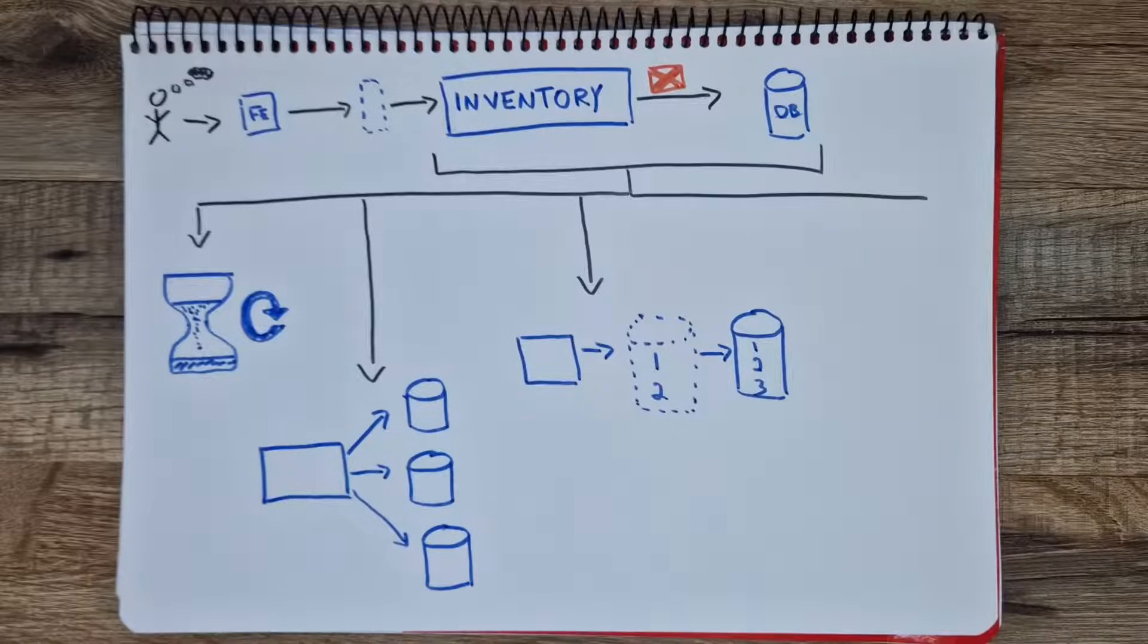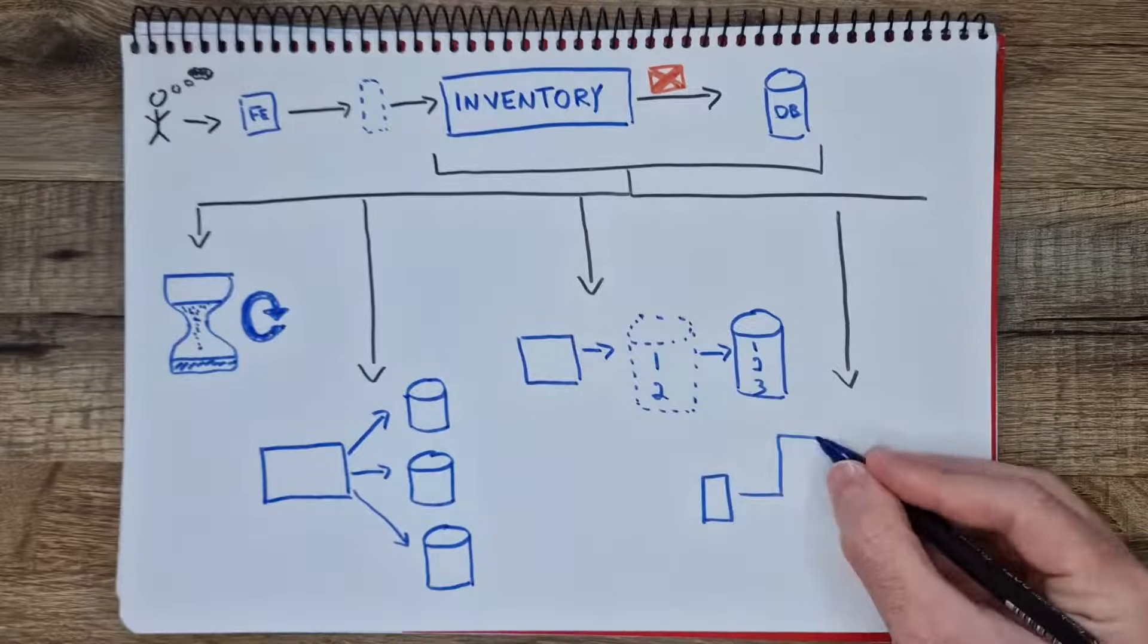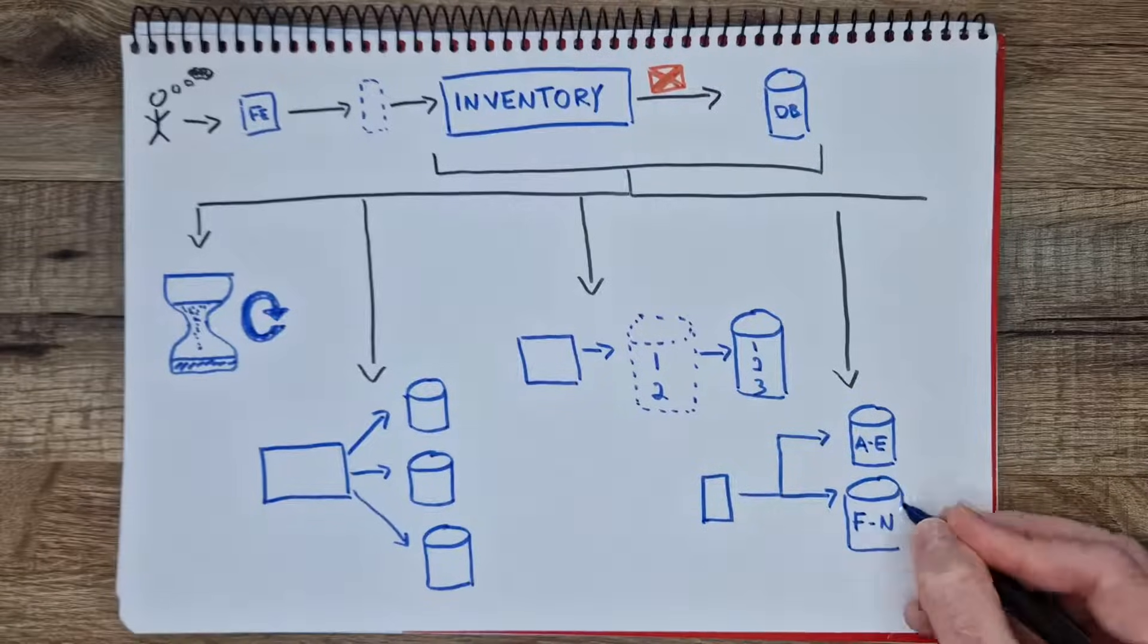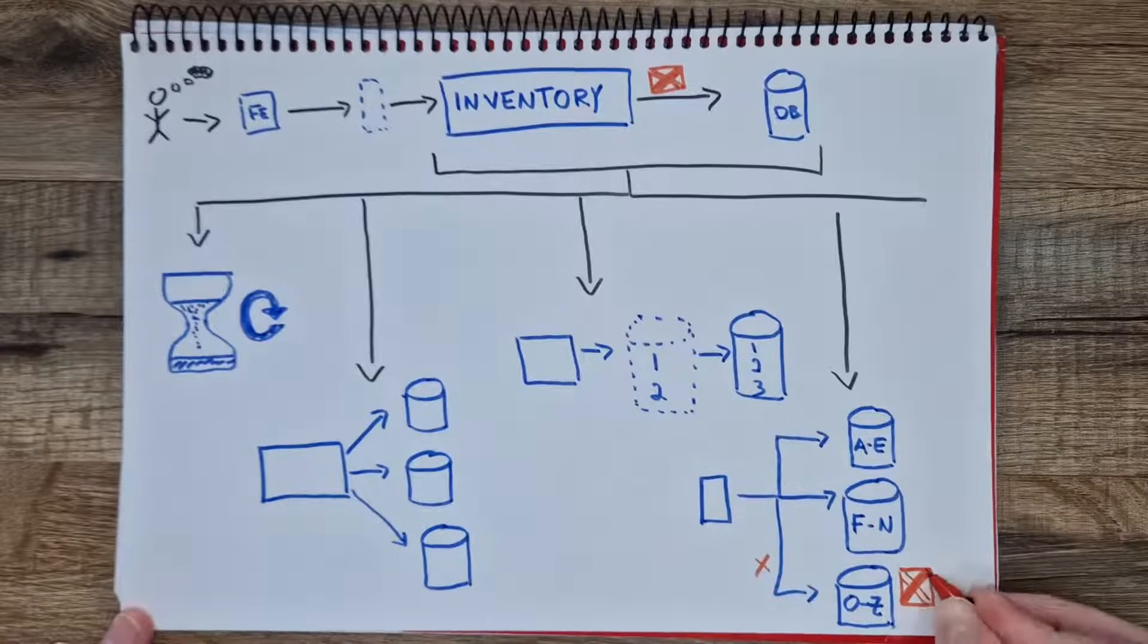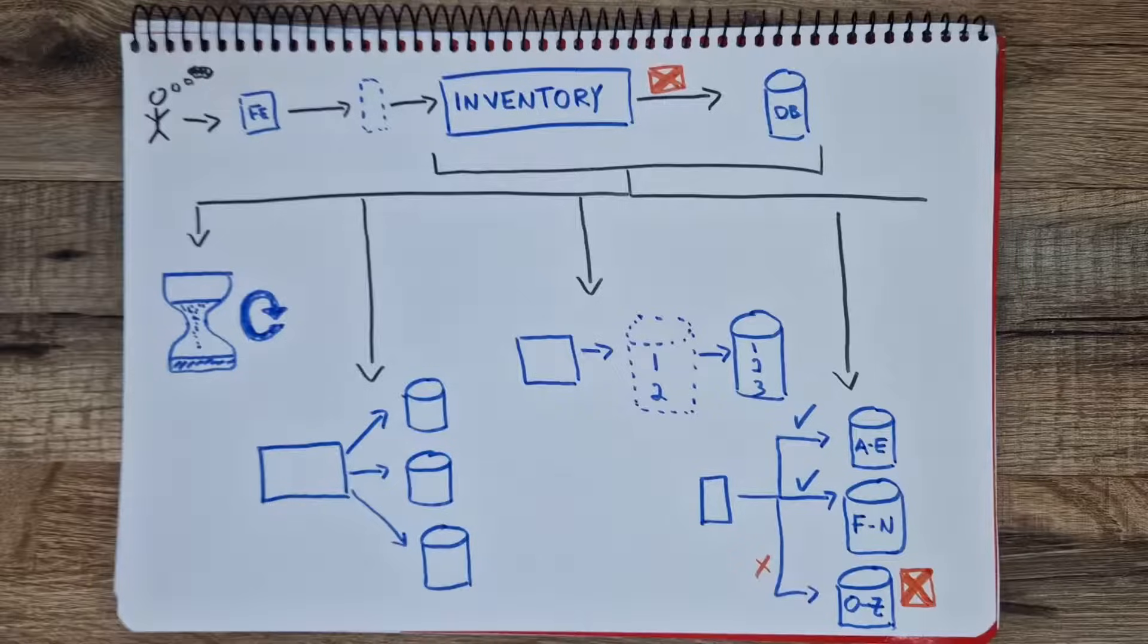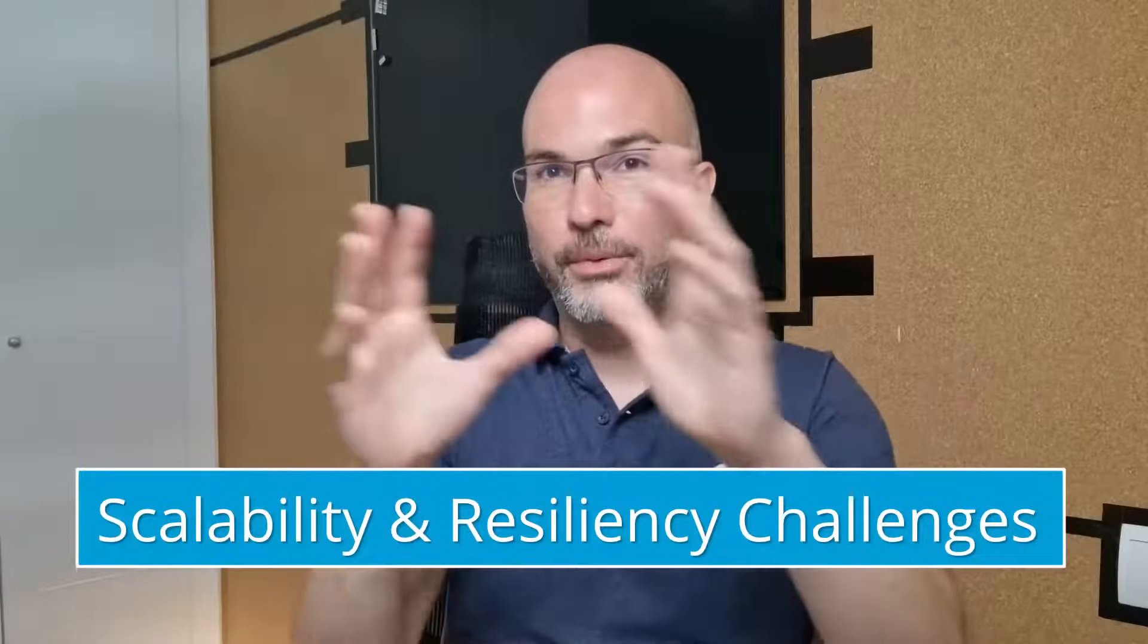We could also split the data between different database instances, so if one fails, only the results from that instance fail, but not for all the queries. This is called sharding. We could group all of these challenges under scalability and resiliency challenges.